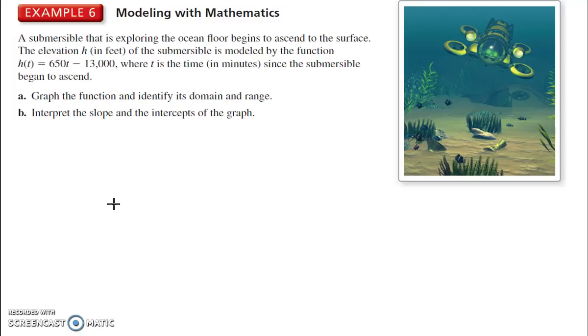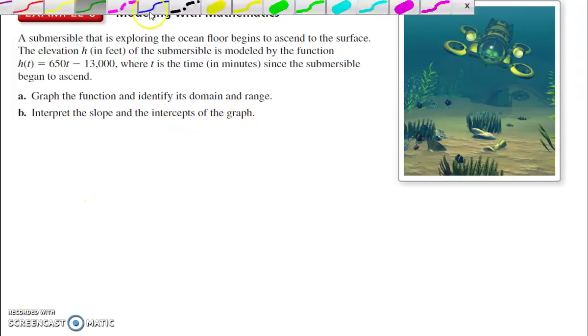Modeling with mathematics. A submersible that is exploring the ocean floor begins to ascend to the surface. The elevation h in feet of the submersible is modeled by the function h of t is equal to 650t minus 13,000 where t is the time in minutes since the submersible began to ascend. Ascend means to move up. Graph the function and identify its domain and range. Interpret the slope and the intercepts of the graph.